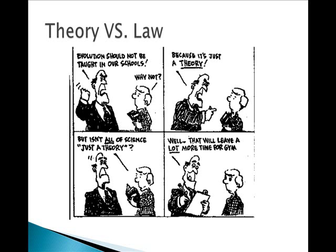A scientific theory represents multiple hypotheses supported over many, many years. If it's been around for more than 200 years, it becomes a law — it's been consistently supported for more than 200 years through many tests in multiple environments and fields of study.